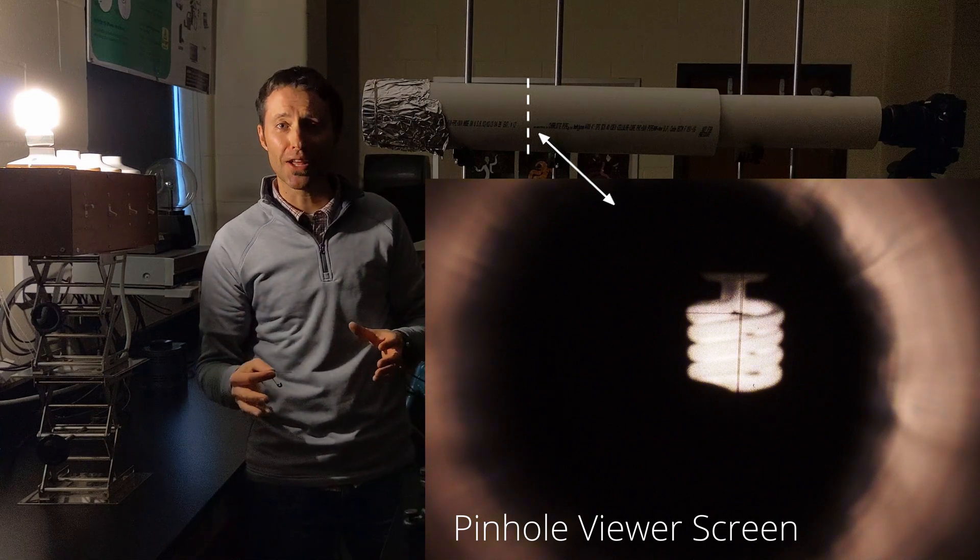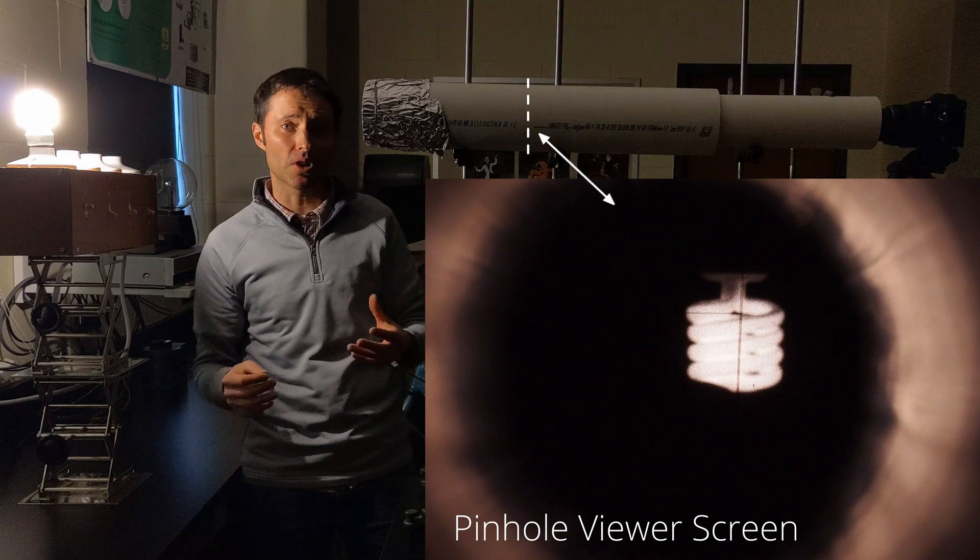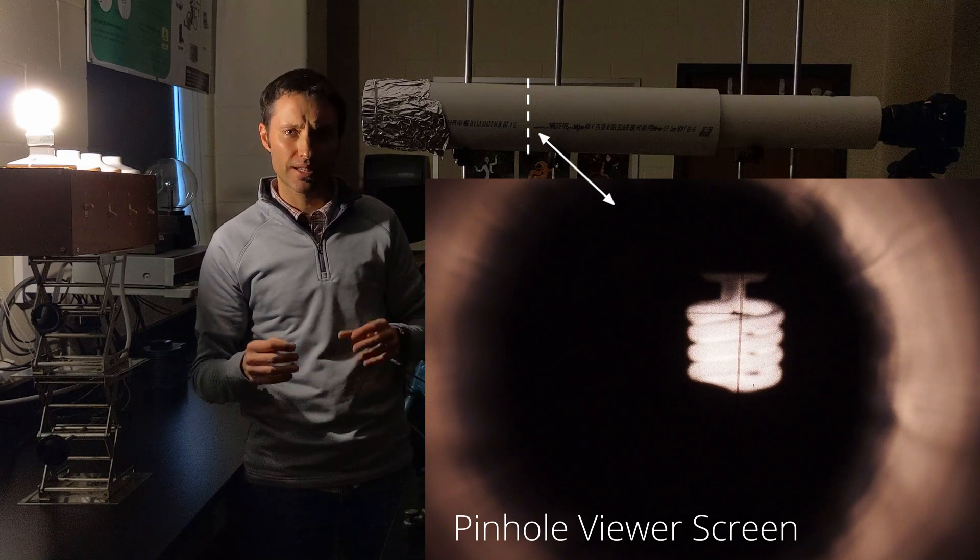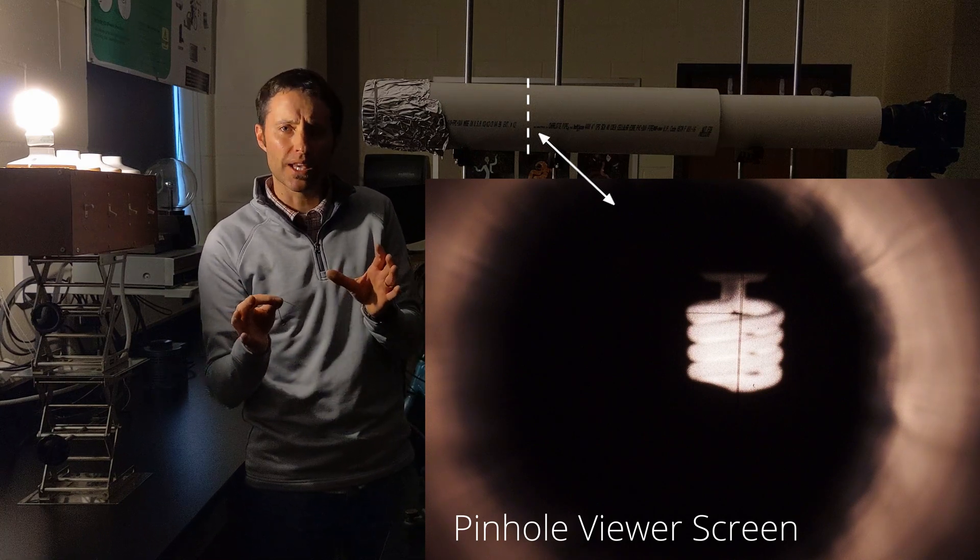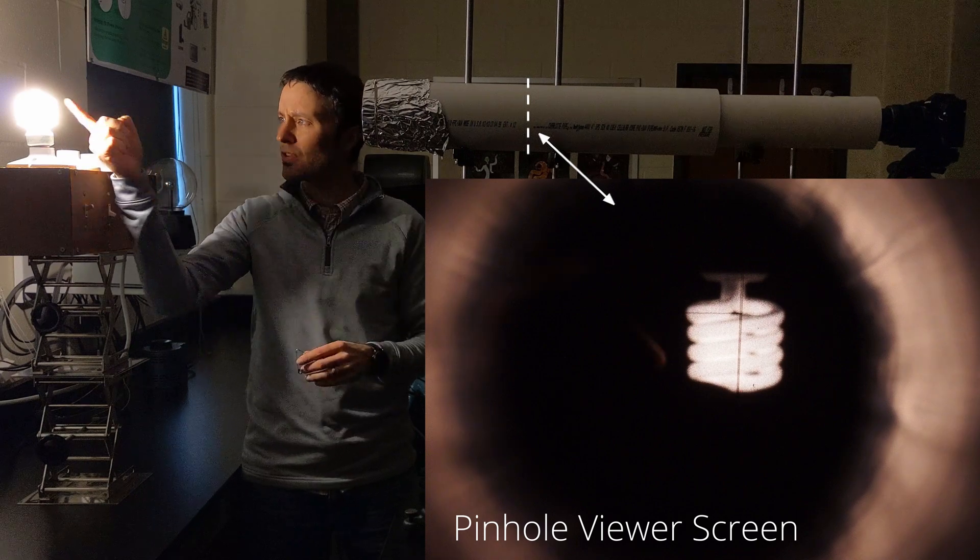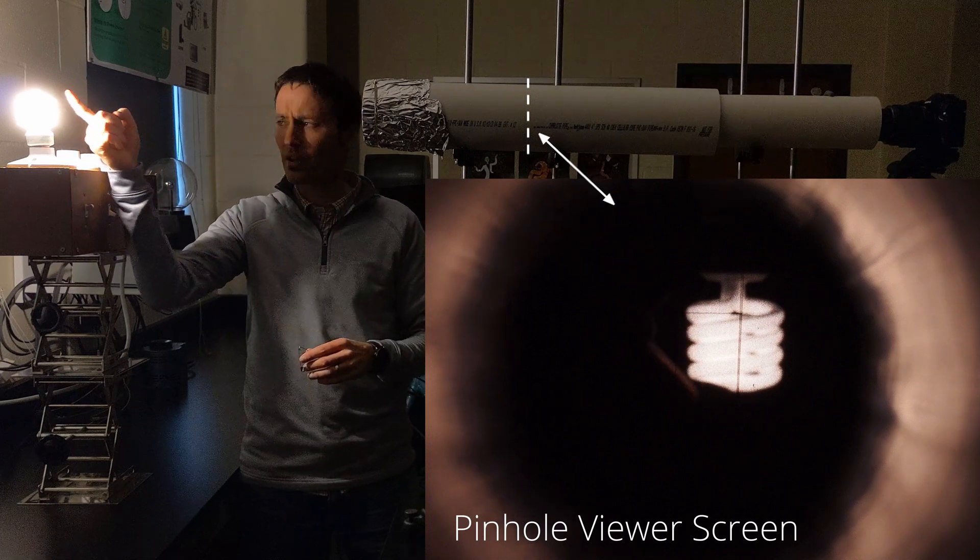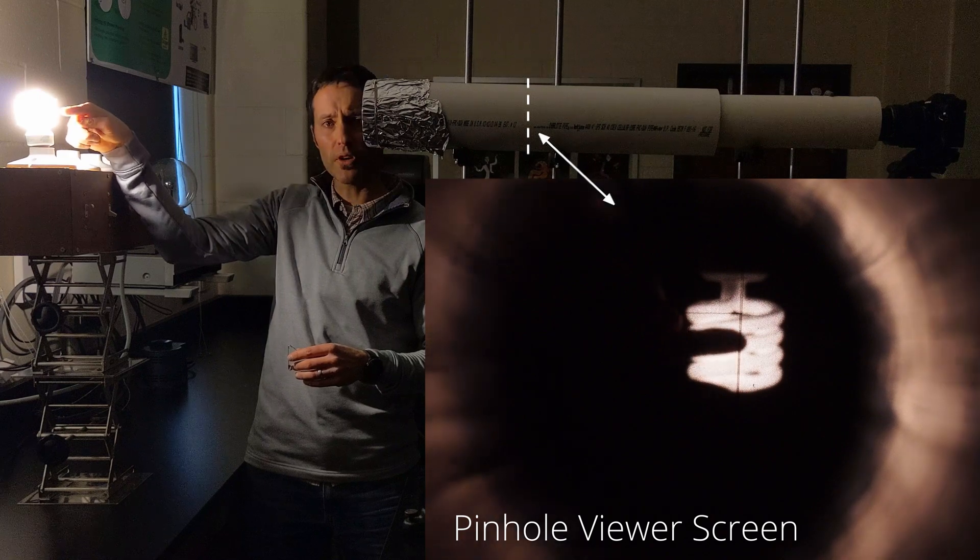Well, it looks like we have a light bulb. We can definitely see an image of a light bulb, and it looks like that light bulb is fairly crisp. The image we can tell, you should be able to see the individual coils like this. If I put my finger in front of there, you should be able to see the shadow of my finger.